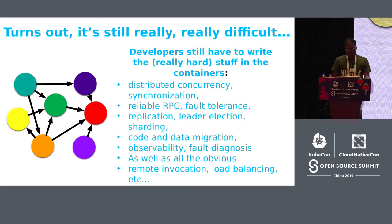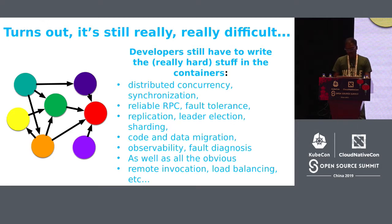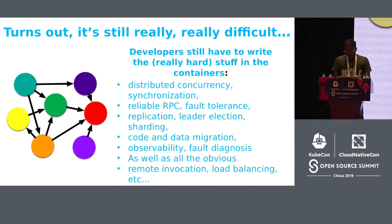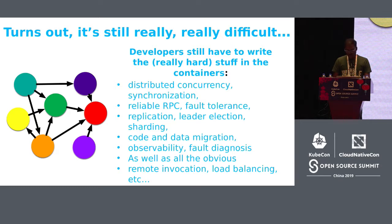The kinds of problems people run into frequently are things like distributed concurrency, synchronization, reliable RPC — how do you make an unreliable network look reliable from a remote procedure call point of view? How do you handle failures, disconnections, reconnections, replication, leader election, and sharding for horizontal scaling? All of these are complex distributed system problems that we are forcing application developers to understand and handle.